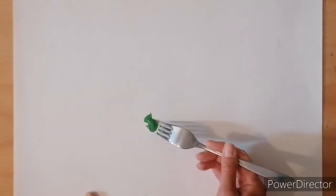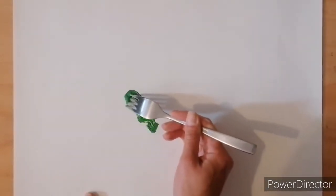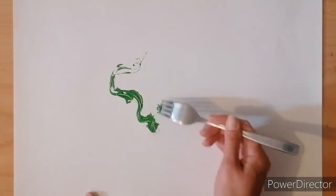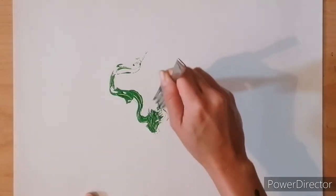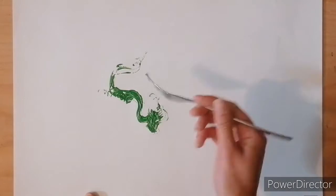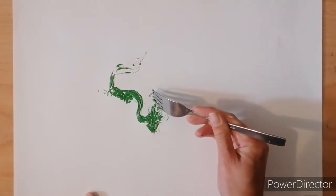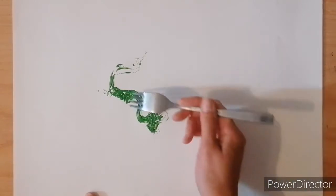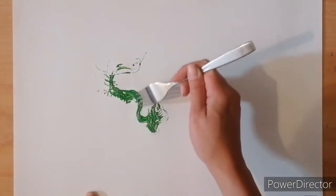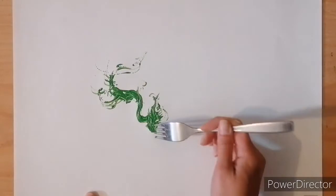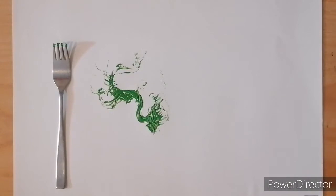Again, have a bit of a practice on a spare bit of paper before you commit to your final art piece. But if we put a blob of paint again, using the four prongs of the fork to push the paint along, we can just experiment with some lovely curly tendrils, if that's the right word. You can use just one prong of the fork on its own to make a more detailed line. All four to make it a little bit wilder. Okay, that's without any white paint on the surface first.